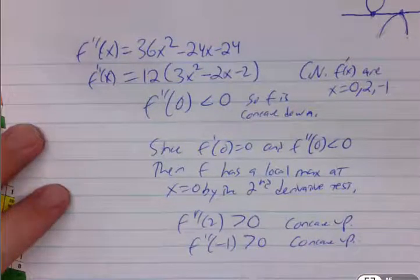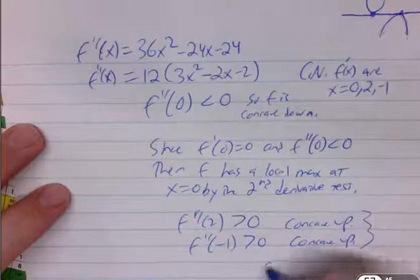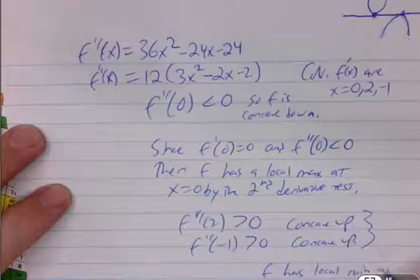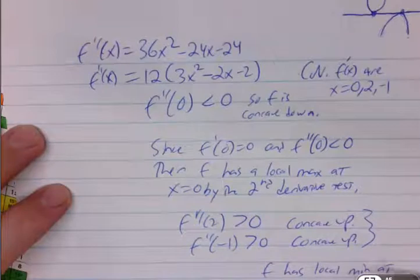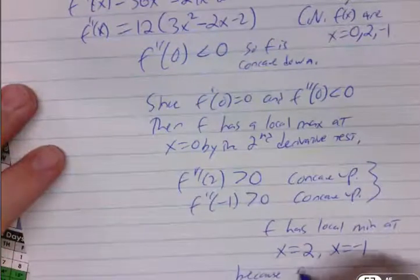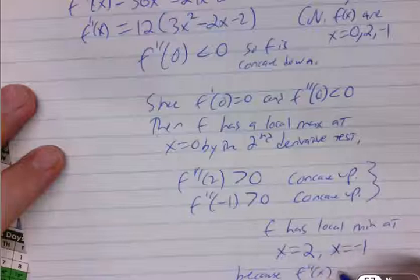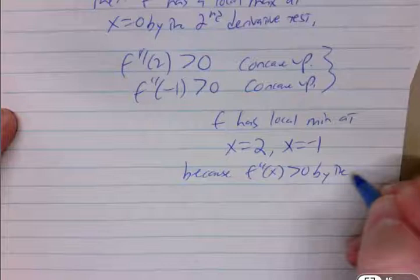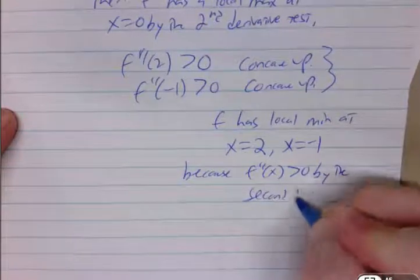So concave up. So both of these are going to yield f has local min at x equals 2 and x equals negative 1 because f double prime of x is greater than 0. And again, by the second derivative test.